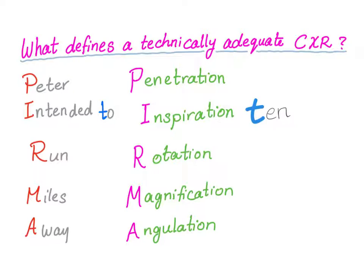Hello, welcome to Medicosis Perfectionalis. This is the second video in Introduction to Radiology, and today let's talk about what defines a technically adequate chest X-ray. For a chest X-ray to be adequate — a good film to look at — certain characteristics must be fulfilled.